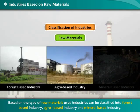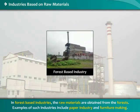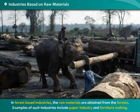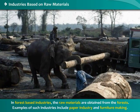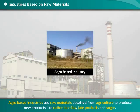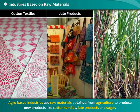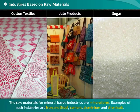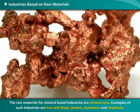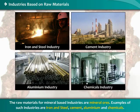Industries based on raw materials include forest-based industry, agro-based industry, and mineral-based industry. In forest-based industries, raw materials are obtained from forests; examples include paper industry and furniture making. Agro-based industries use agricultural raw materials to produce cotton textiles, jute products, and sugar. Mineral-based industries use mineral ores; examples include iron and steel, cement, aluminum, and chemicals.